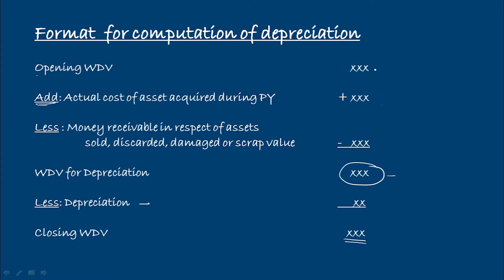And the formula: opening WDV, add purchase, less sale, less destroy, less — achieve from the government or local authority, grants received more than that — so that is less than that.